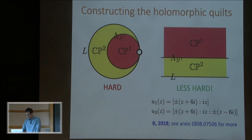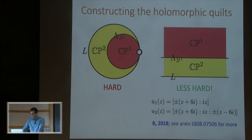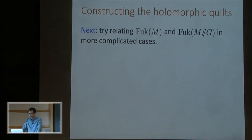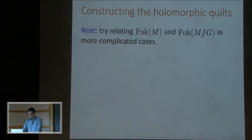I thought that was pretty cool. I like this for two reasons: it's not just applicable in this case — I think it should apply to more general examples comparing Fuk(M) and Fuk(M mod G). And it's also the first explicit example of something called figure-eight bubbling, which is what half of my thesis was about — so that part was not vacuous. This year I'd like to think about more general examples of M and M mod G relating their Fukaya categories, starting with the smallest generalization: what happens when M is some complex surface other than CP2. If anyone wants to think about this with me, I'd love that. Thank you.